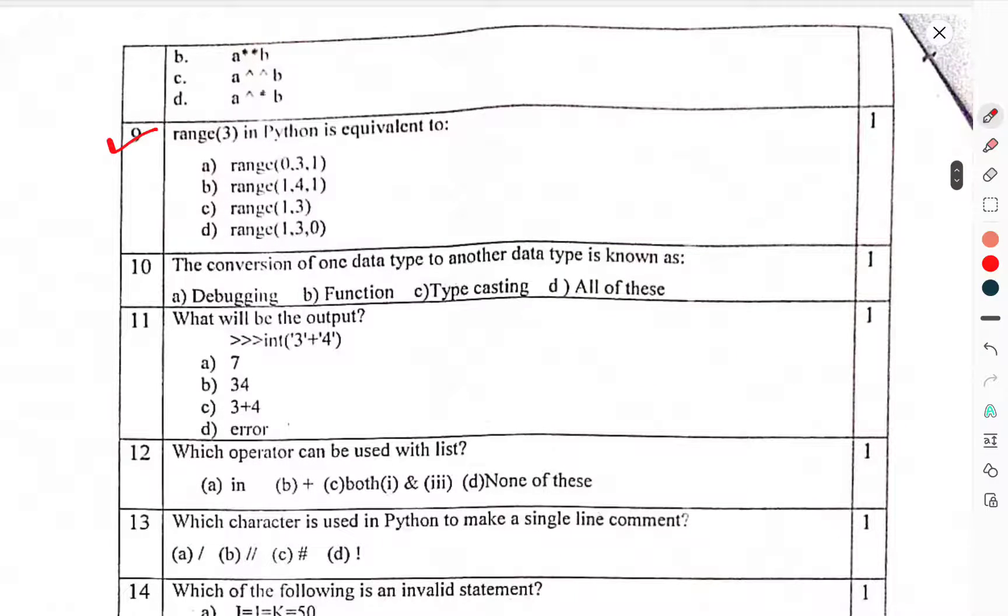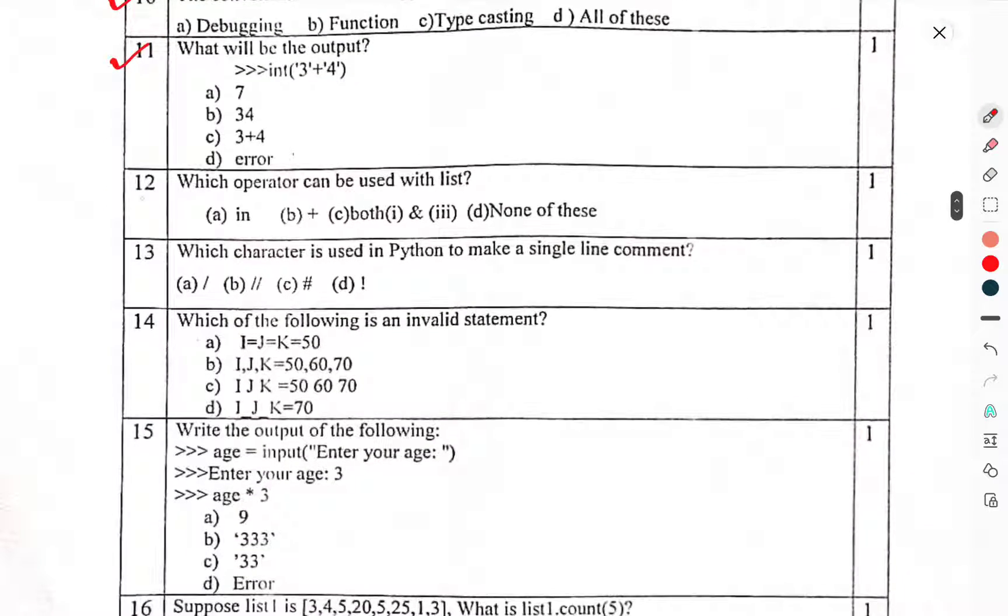Question 9: Range 3 in Python equivalent to. Question 10: The conversion of data type to another data type is known as. Question 11: What will be the output of 3 plus 4 is. Question 12: Which operator can be used with the list. Question 13: Which character is used in Python to make a single line comment?